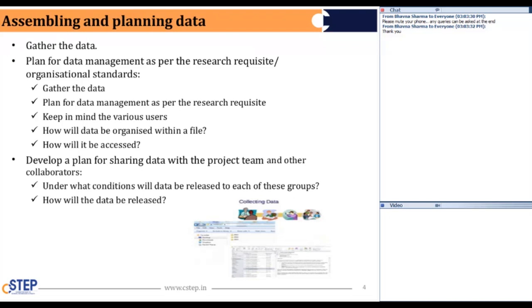The next point is plan for the data management as per the research requisite organization standards. This involves the same gathered data that you have initially collected, plan for the data management as per the research necessary things, keeping in mind the various users that are going to use your data that you have gathered at the end, and how will the data be organized within the file. That means if your organization, like for C-STEP, we use a certain format, a file naming convention for our data.